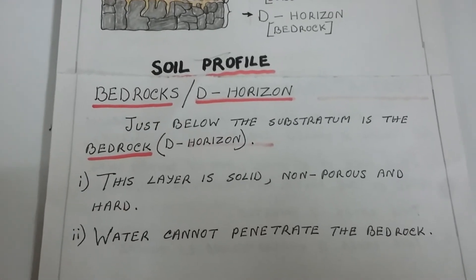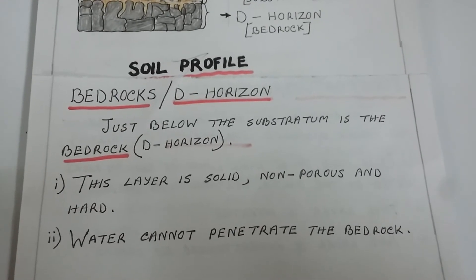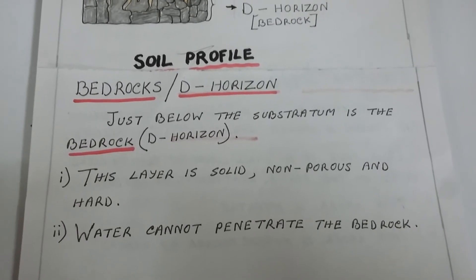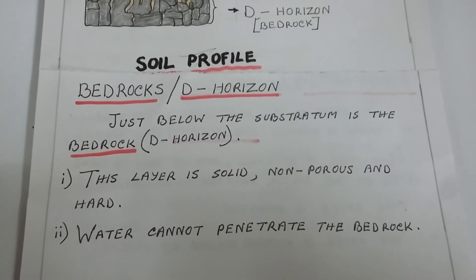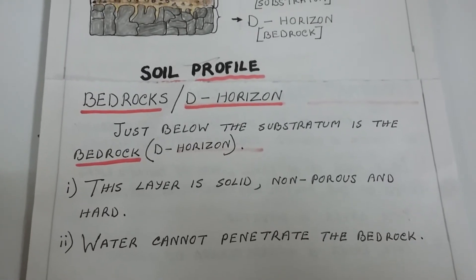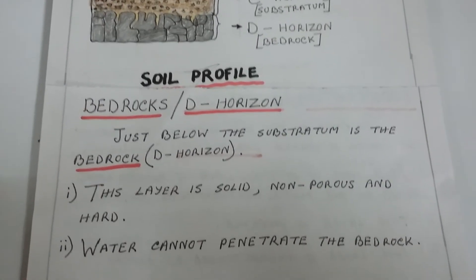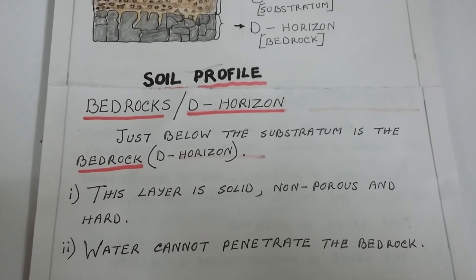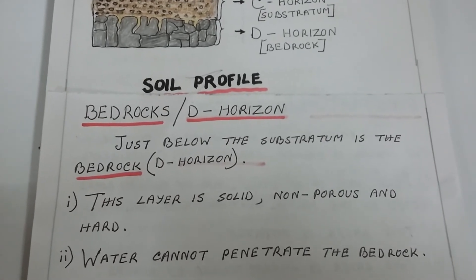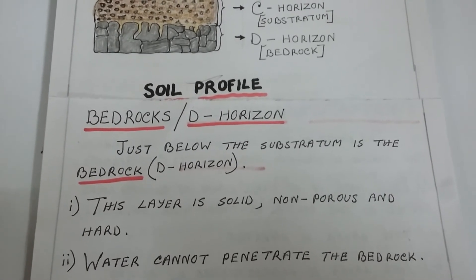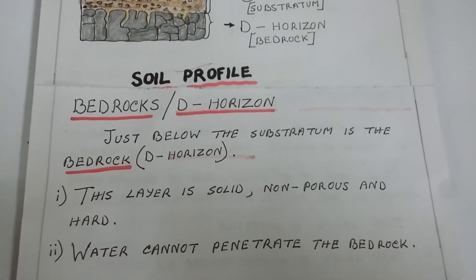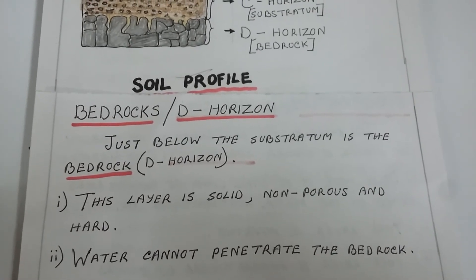The layer just below the substratum is the bedrock, also called D horizon. The bedrock is a solid, non-porous and hard layer of weathered rocks. This layer cannot be easily dug up even with a spade. Water cannot penetrate the bedrock, so it accumulates above it to form the water table. The reservoir of rainwater accumulated in this layer is called ground water.